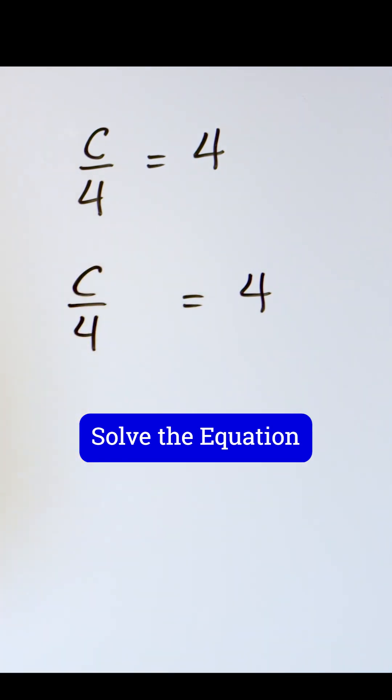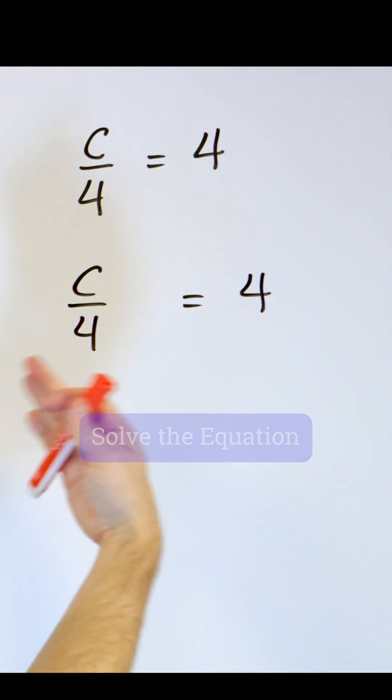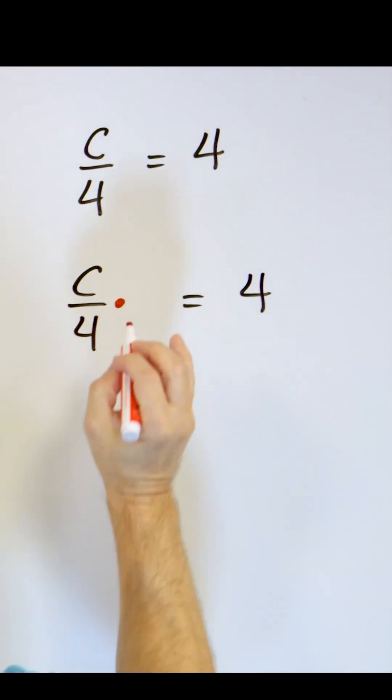Here we have divided by 4. We want to undo that division. What is the opposite of division? It is multiplication. So we multiply.